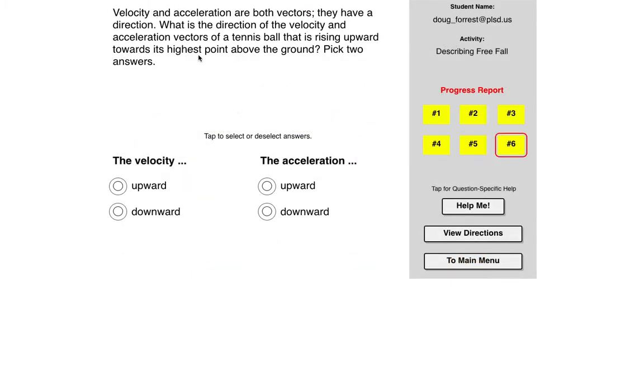Velocity and acceleration are both vectors. They have a direction. What is the direction of the velocity and acceleration vectors of a tennis ball that is rising upward towards its highest point above the ground? Well, the velocity would be upward. Acceleration, anytime you're a projectile or in free fall, always downward.